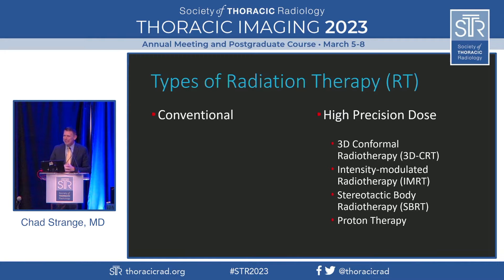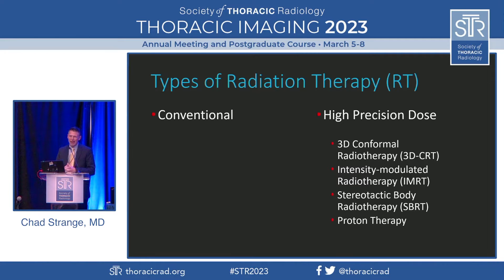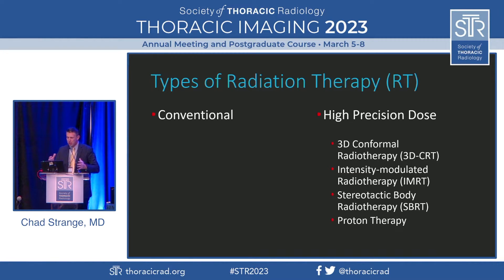There are several different types of radiation therapy. There's conventional radiation therapy, and then there's a group of newer modalities lumped together called high-precision dose. There's 3D conformal radiotherapy (3D CRT), intensity modulated radiotherapy (IMRT), stereotactic body radiotherapy (SBRT), and proton therapy. These get lumped together because, especially from an imaging point of view, they tend to give us similar imaging findings.